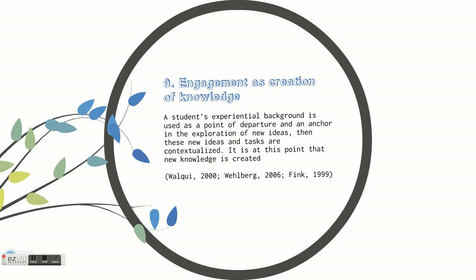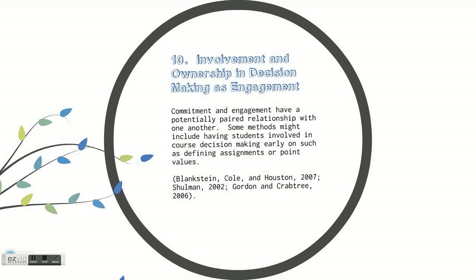But then again, maybe it isn't the size of groups, the way we do particular projects, or the way students retain information. Instead, maybe engagement is the involvement and ownership in decision-making that makes for an engaged experience. Commitment and engagement have a potentially paired relationship with one another. Some methods for making this happen might include having students involved in course decision-making early on, such as defining the assignments, the point values for the assignments, the core curriculum, the reasons for it, and how students are going to be evaluated.